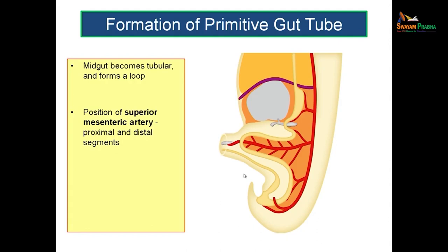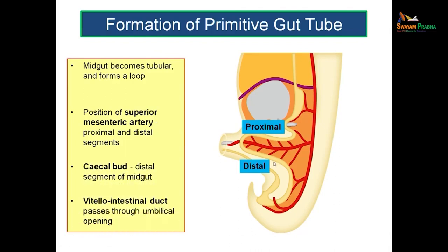The midgut was a straight tube in the beginning; later it gets looped and forms a U-shaped loop. The superior mesenteric artery forms an axis for this midgut loop, dividing it into two segments: the segment lying cranially is known as the proximal segment, and the segment lying caudally is known as the distal segment. At this point a cecal bud will form, and that cecal bud is actually formed in the distal segment of the midgut. The vitelointestinal duct passes through the umbilical opening.